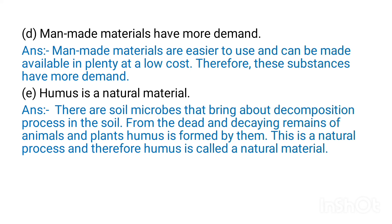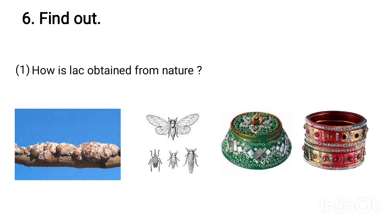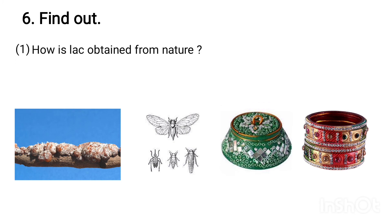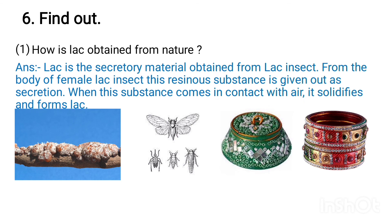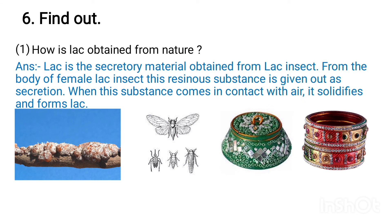Find out: How is lac obtained from nature? Answer: Lac is a secretory material obtained from the body of female lac insects. This resinous substance is given out as a secretion. When this substance comes in contact with air, it solidifies and forms lac. You can see the lac on the tree along with the insects.